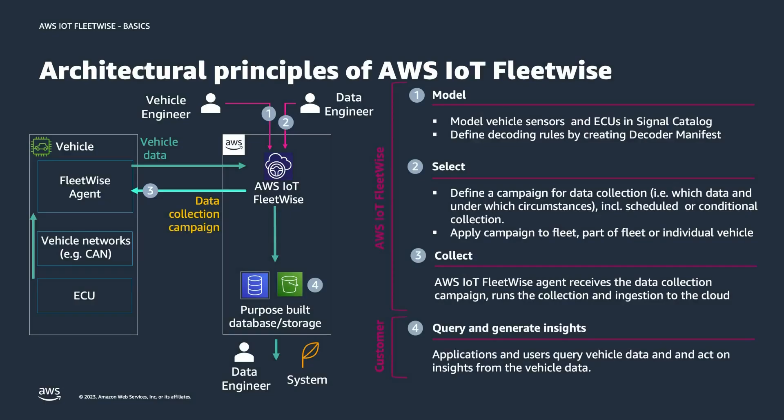First are the architectural principles of AWS IoT FleetWise. We're separating here between the things that IoT FleetWise actually takes care of, as well as what the customer is doing or should be doing afterwards. Starting with the first part: the modeling part. We see the vehicle engineer on the left in the diagram, and the vehicle engineer is the one with the knowledge about how the in-vehicle communication looks like.